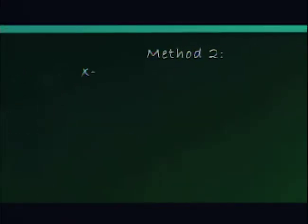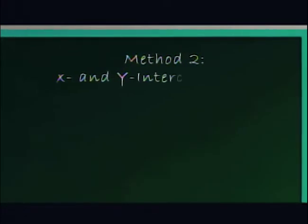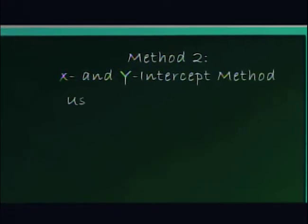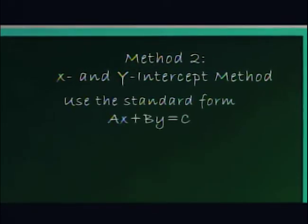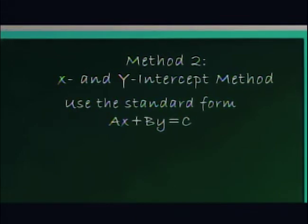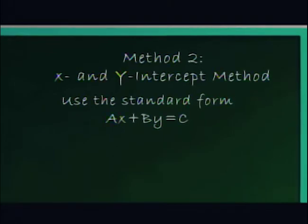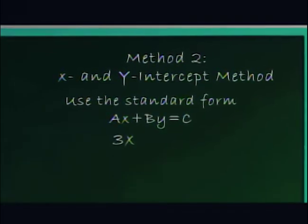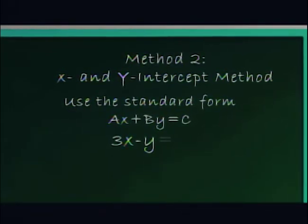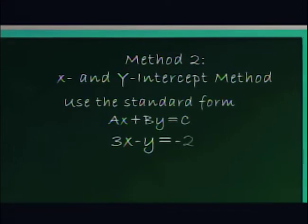The second method utilizes both the x and y intercepts. In this method, we do not need to rewrite the equation. In this example, we will use the original equation 3x minus y equals negative 2.